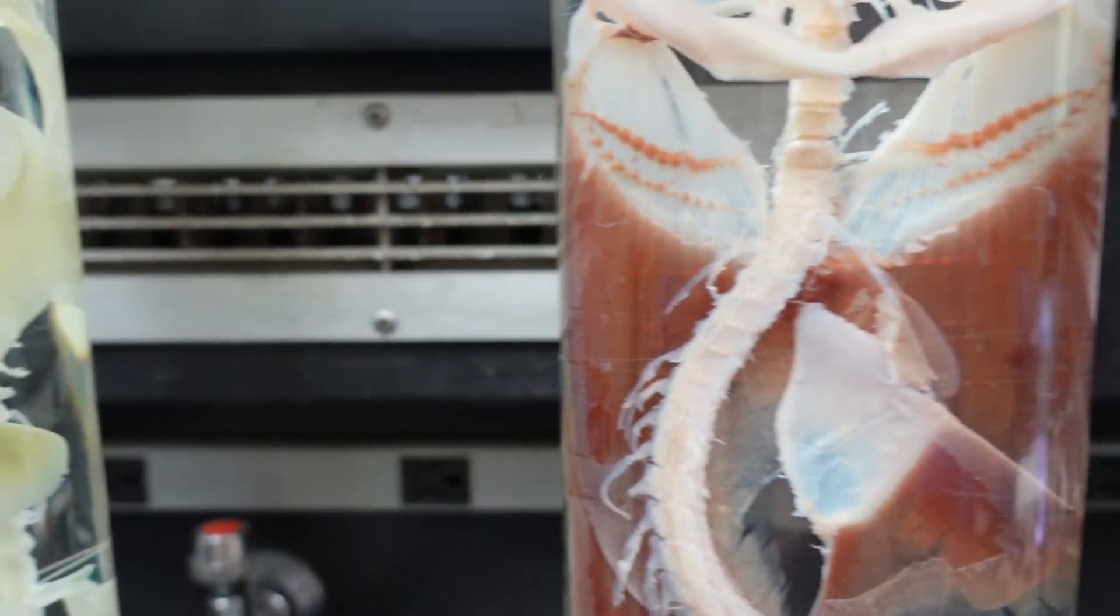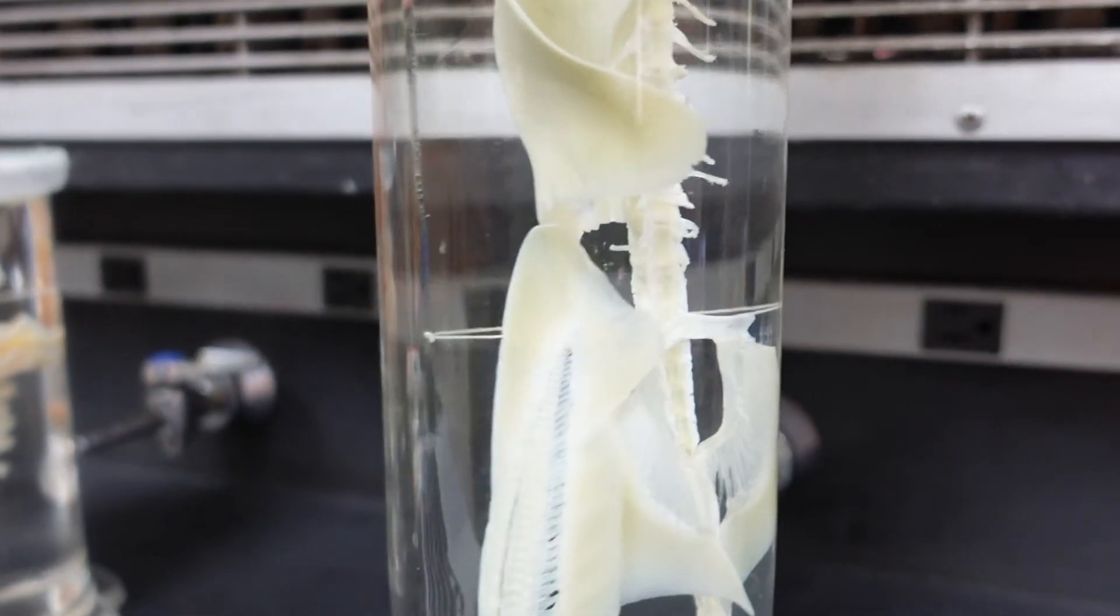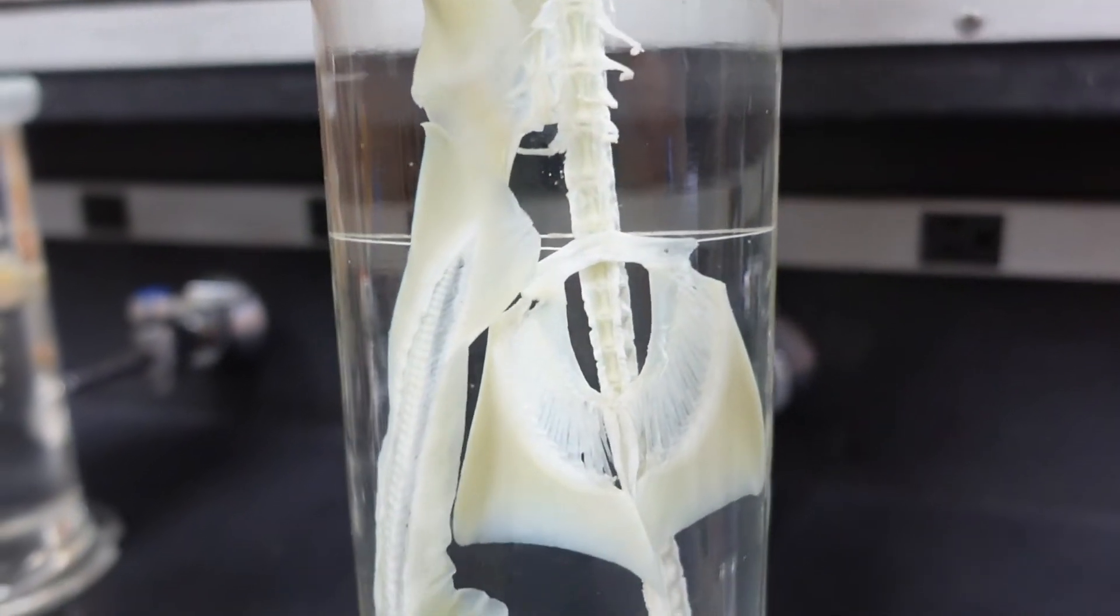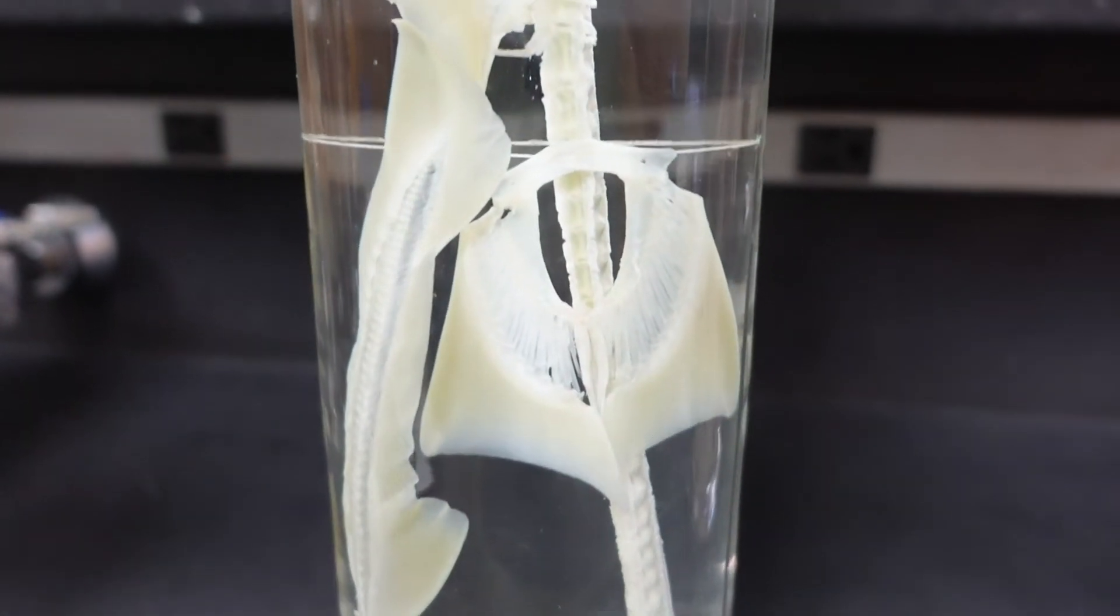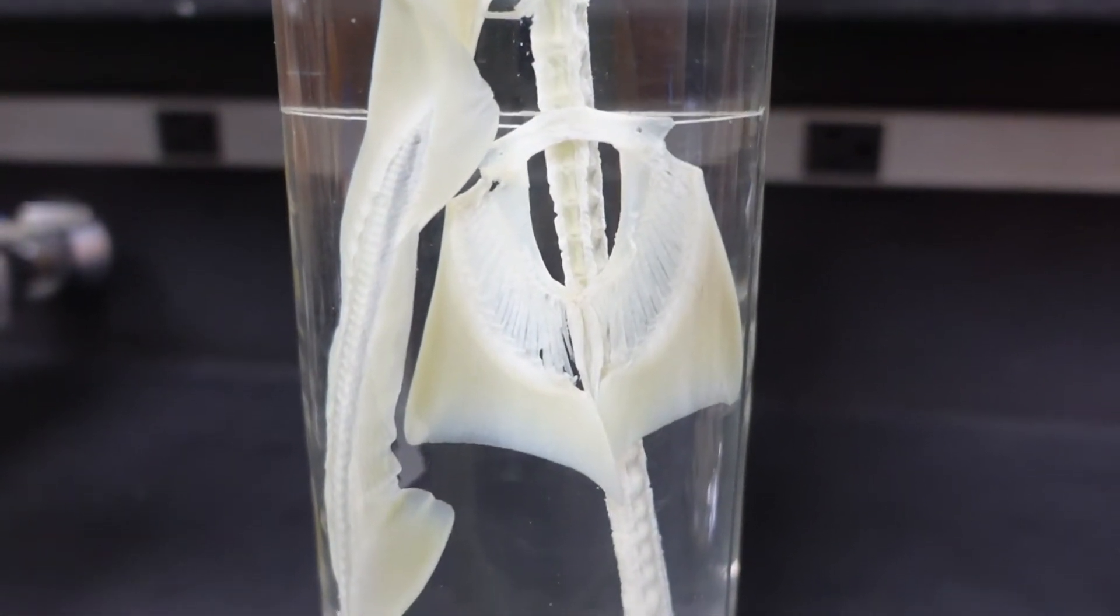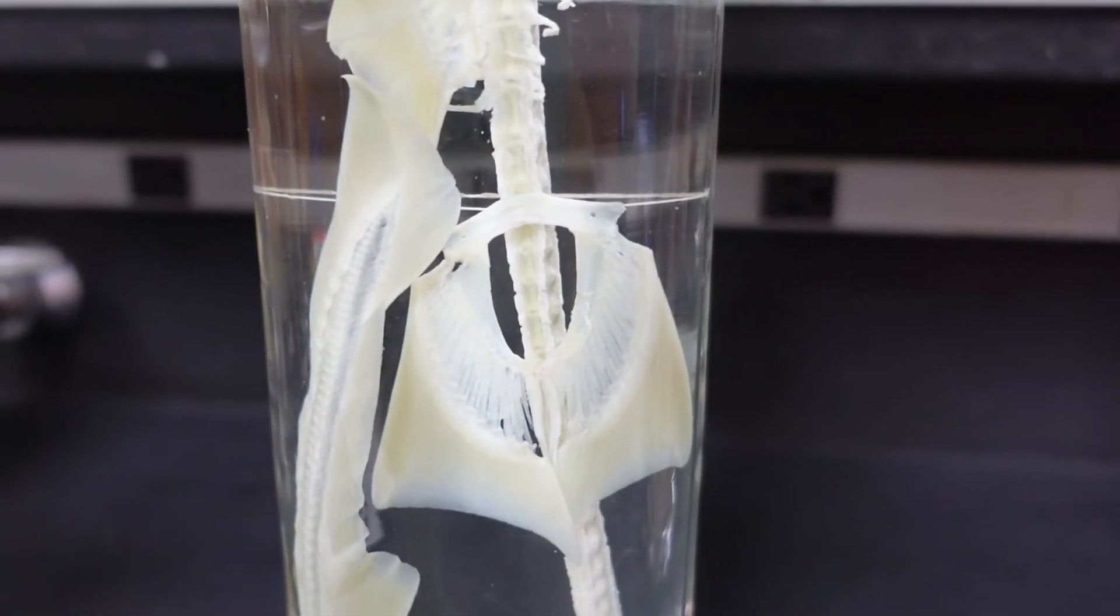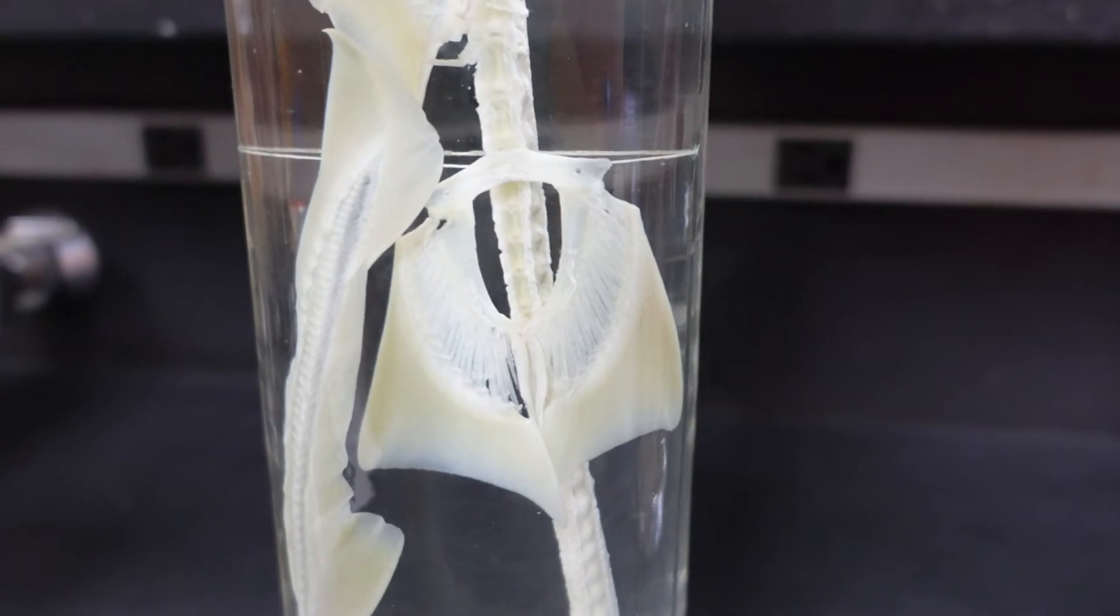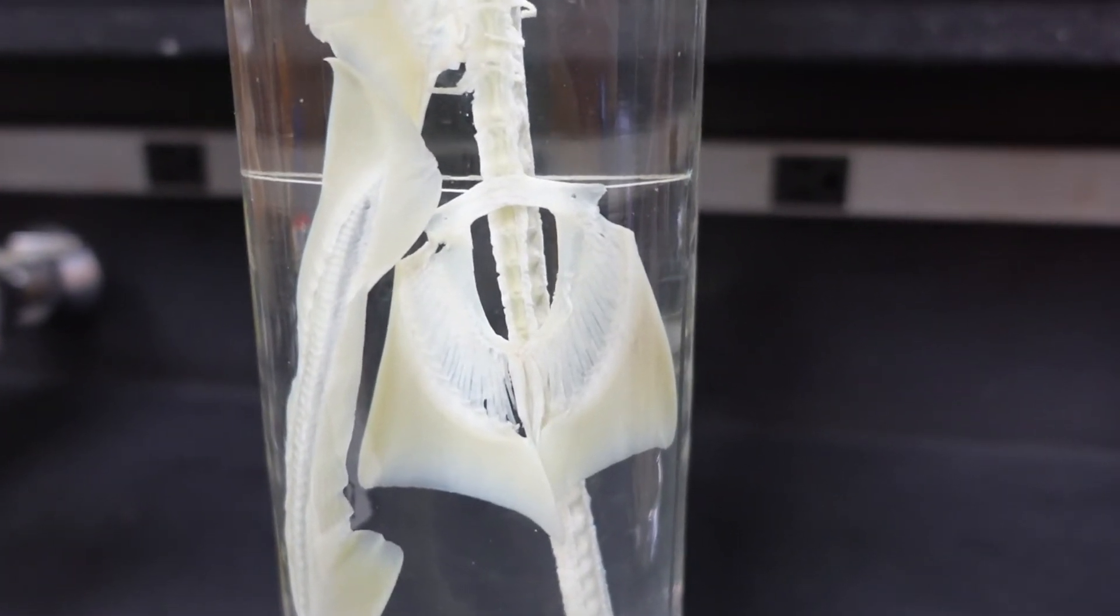We're going to move to the smaller shark for the pelvic girdle because the pelvic girdle on the large one is separated and very difficult to see. It has disarticulated and fallen to the bottom of its container because pelvic girdles aren't well attached to the axial skeleton, if at all.